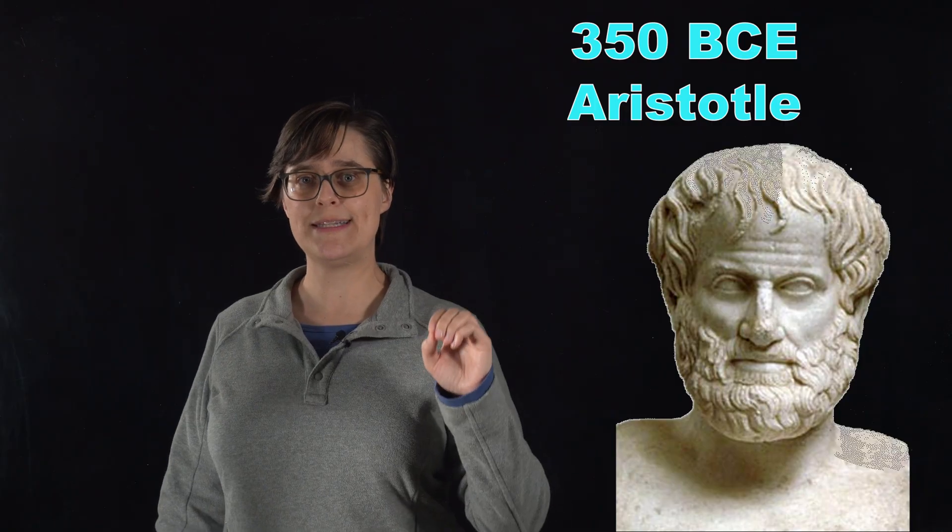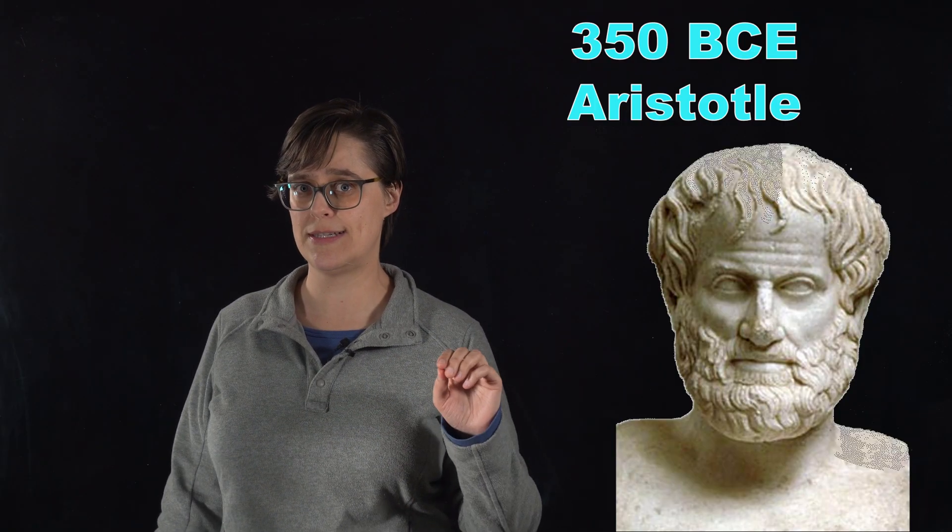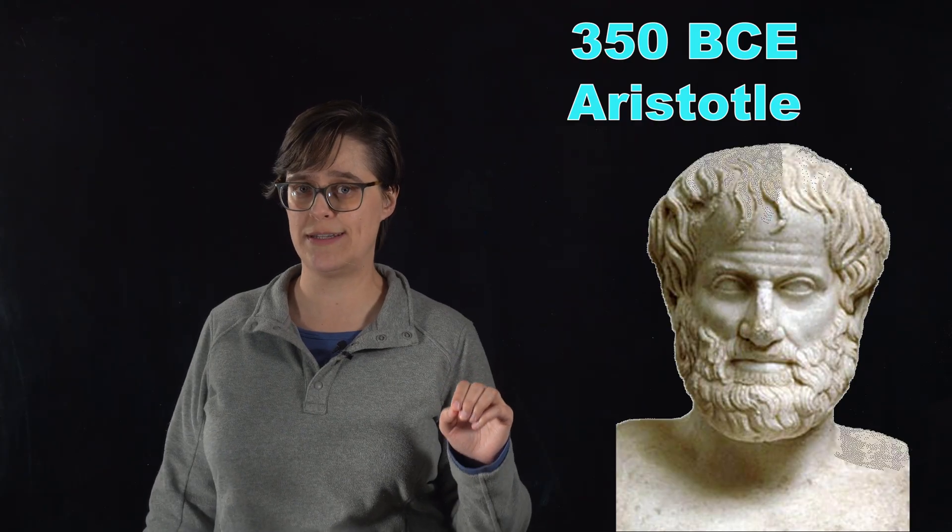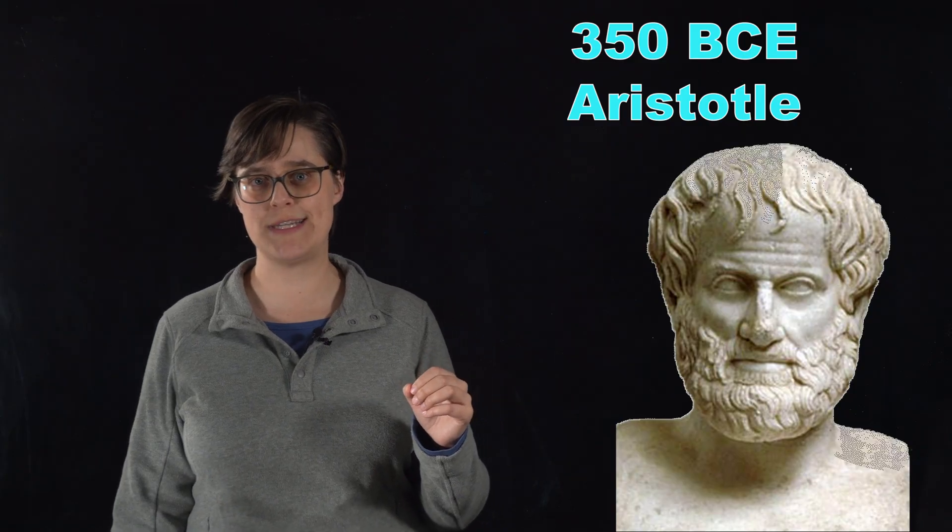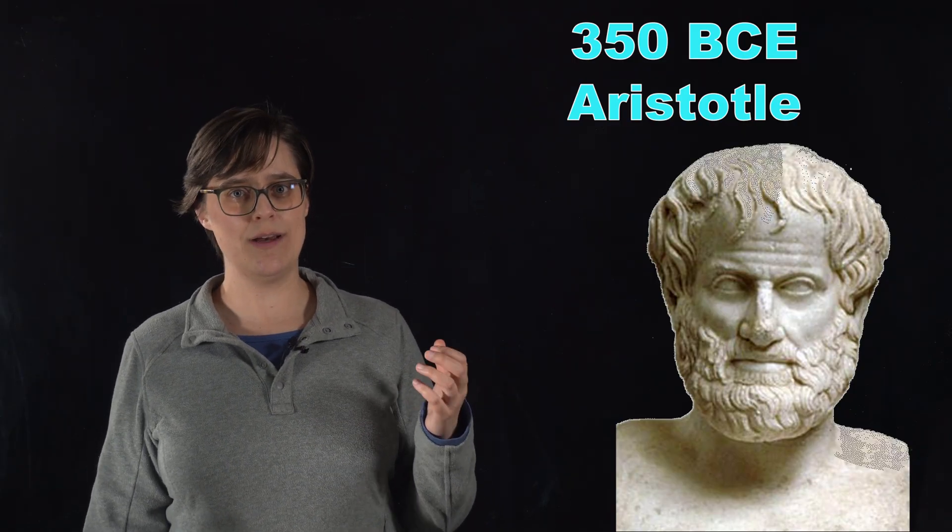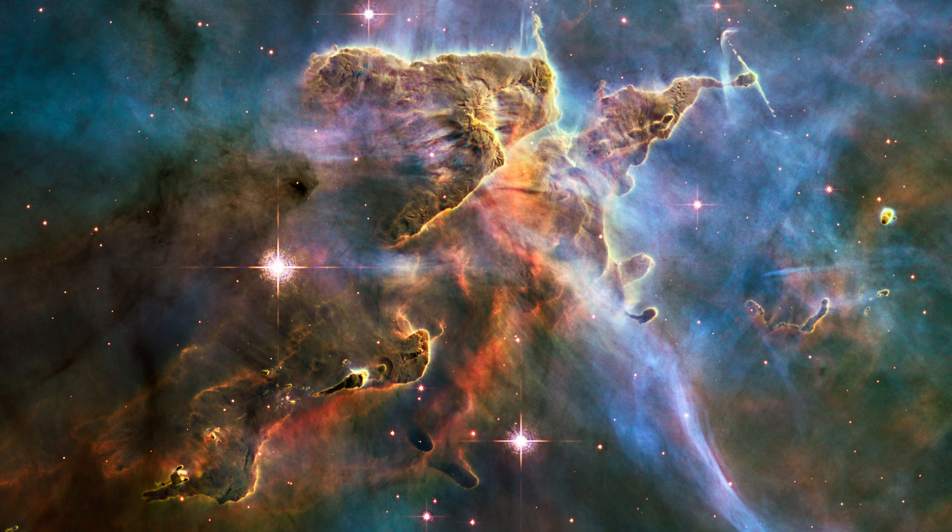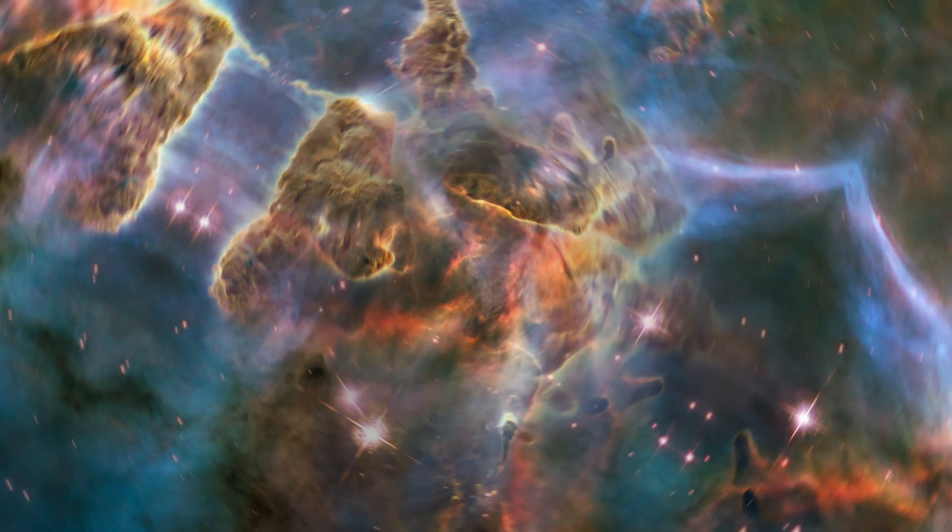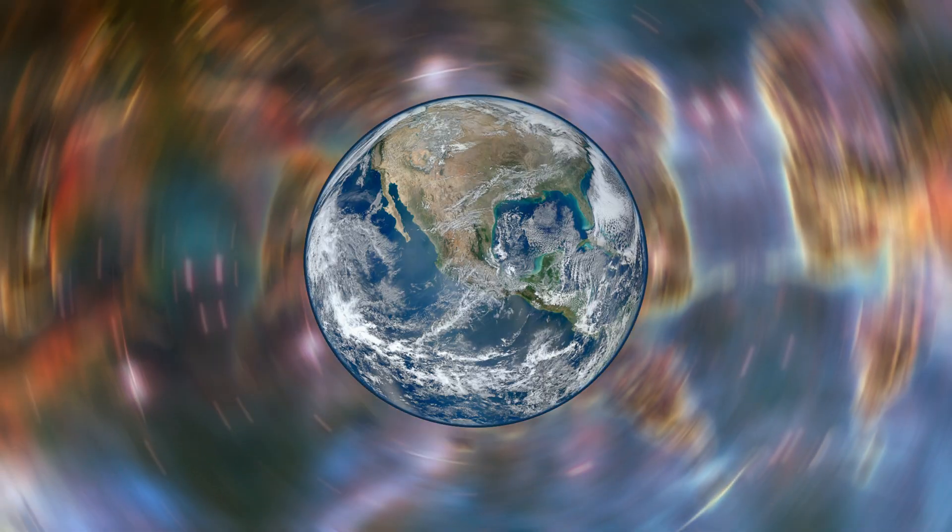Aristotle based these classical elements not on experimental evidence as modern science understands it, but on observations and philosophical reasoning. His main observation was that celestial bodies all move in perfect circles around a stationary earth, an earth which of course was at the center of the universe.